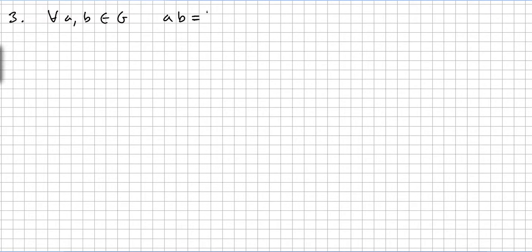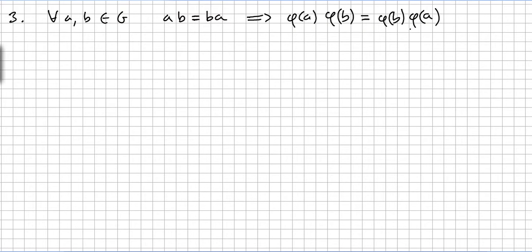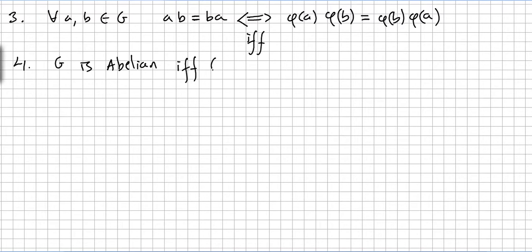Property 3: for all elements A and B in G, if AB equals BA, that means phi of A times phi of B equals phi of B times phi of A. So A and B commute if and only if phi of A and phi of B commute. Property 4: G is abelian if and only if G-bar is abelian.